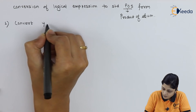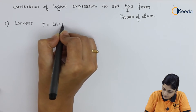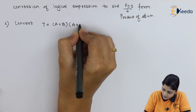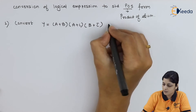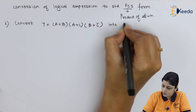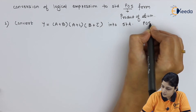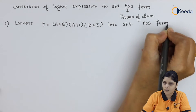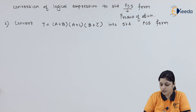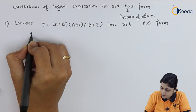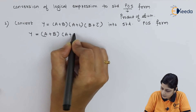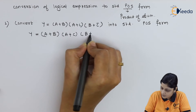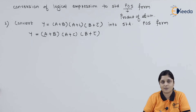Convert y equals to (a plus b)(a plus c)(b plus c̄) into standard POS form. Take the expression y equals to (a plus b)(a plus c)(b plus c̄). The procedure here is the same.